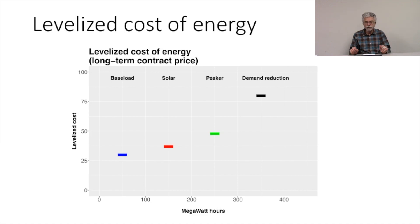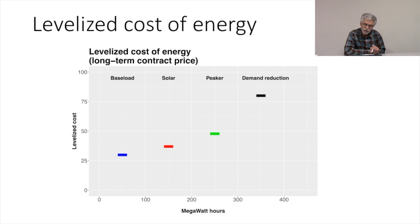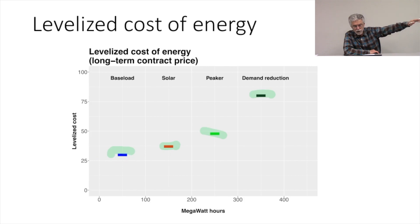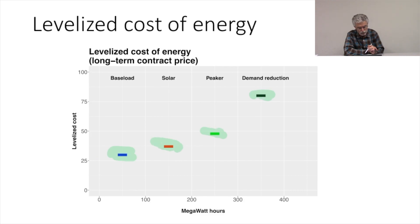So let's look at the levelized cost of energy. Here is a picture of the levelized cost of energy. I've ordered these plants in terms of the levelized cost of energy: baseload is first, then solar, then peaker, and then demand reduction. So if we were to allocate these plants in terms of the levelized cost of energy — the long-run contract price for a 30-year PPA, or power purchase agreement — baseload has the lowest levelized cost of energy, solar has the next, peaker the next, and demand reduction the next.